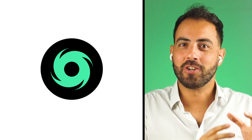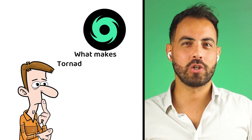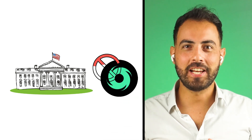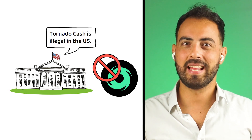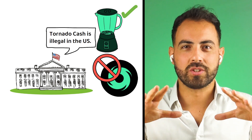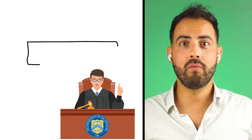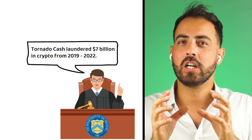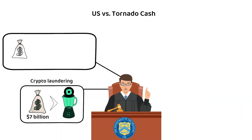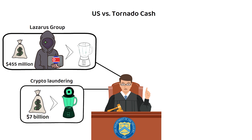Now that we know what Tornado Cash is and how it works, let's explore what makes it unique. Well, being blacklisted by the US government is pretty unique — meaning yes, it is illegal to use or access Tornado Cash services if you are in the United States. The US Department of the Treasury has accused Tornado Cash of laundering over $7 billion in virtual currencies between its inception and when the sanctions started in August 2022. This seems to be in relation to the $455 million stolen by the Lazarus Group, a North Korean state-sponsored hacking group, which was then mixed through Tornado Cash.